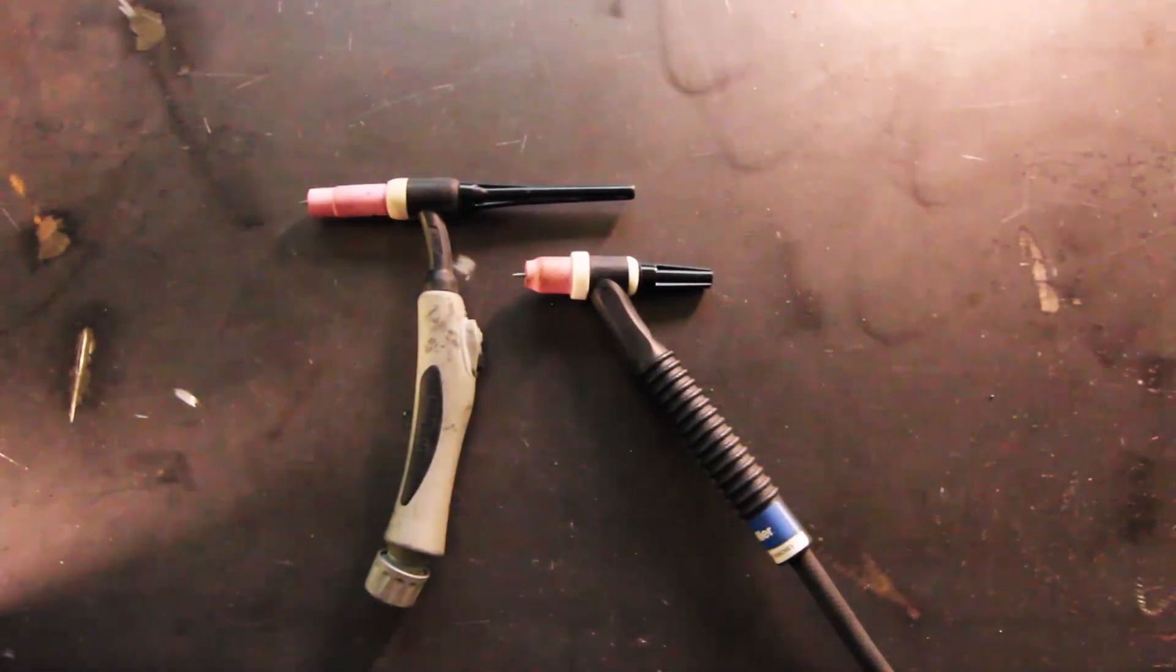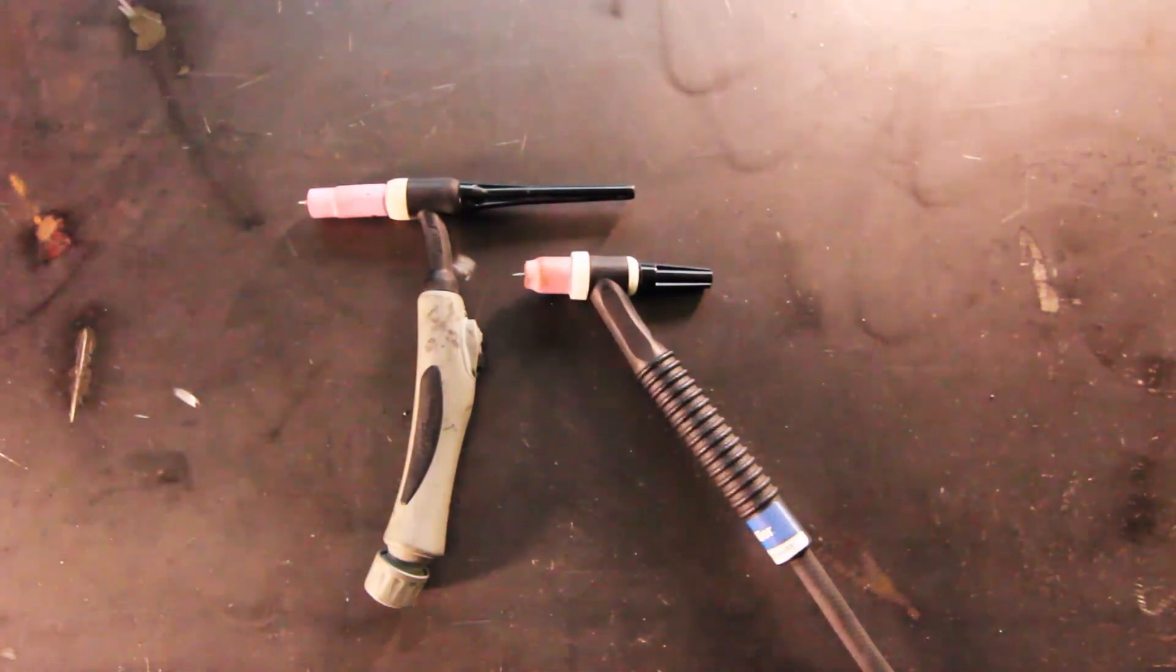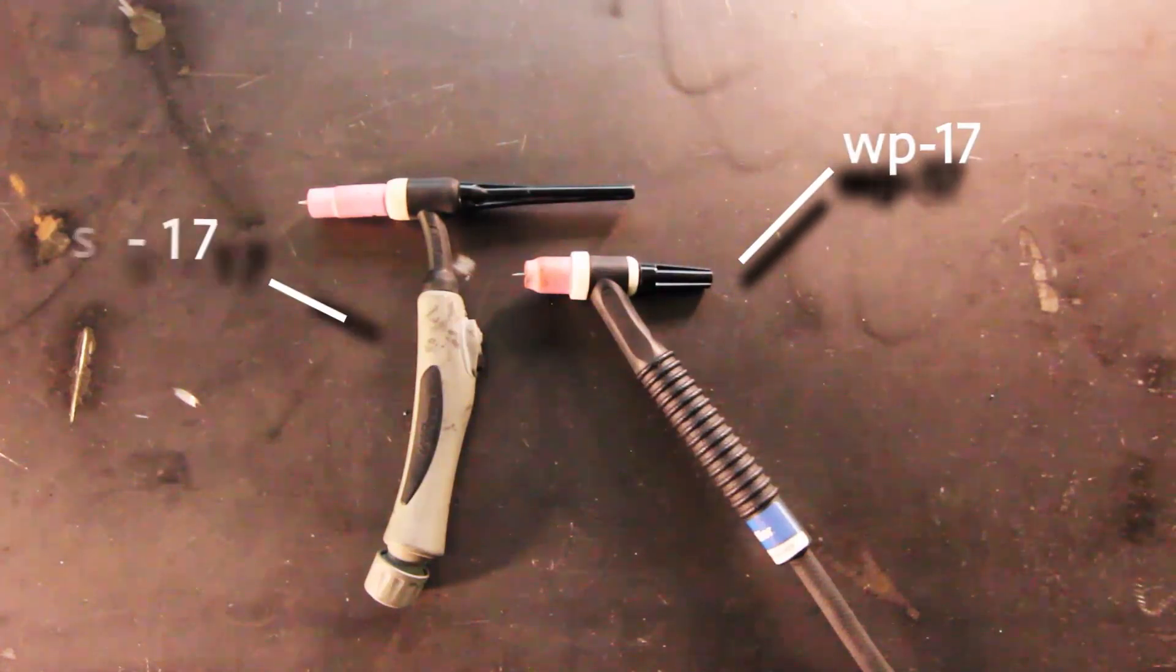Here are two examples of air-cooled torches. Air-cooled torches are what most beginners and hobbyists are going to use. There's also water-cooled torches out there. This one is the WP-17 and this one is the LS-17.